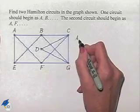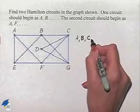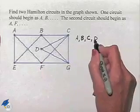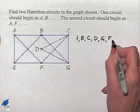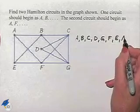That would be listed A, B, C, then on to D, back out to G, then F, E, and back to A.